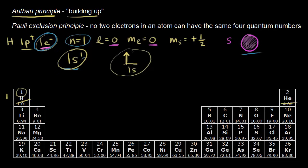We're done with hydrogen's one electron. Let's move on to helium — two electrons to worry about. Atomic number of two means two protons and two electrons. We're still in the first shell, the first energy level, so n equals one. If n equals one, l must equal zero, and ml must equal zero.